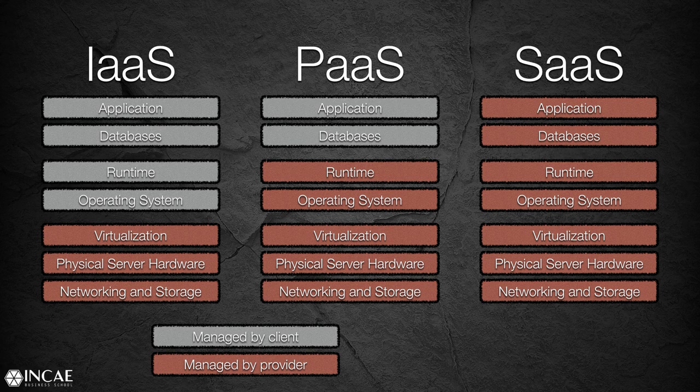End users are those of us who really don't care about where our application is running. A good example of software as a service offerings is Gmail. How many of us have ever wondered on what operating system the Gmail servers are running? We never ask this question. We've never wondered where in the world our data is stored, what operating system it's running on, or in what programming language Gmail was coded. We don't care about this — and that's precisely what we want. We want all these things to be abstracted from us. We only want to consume the software application.